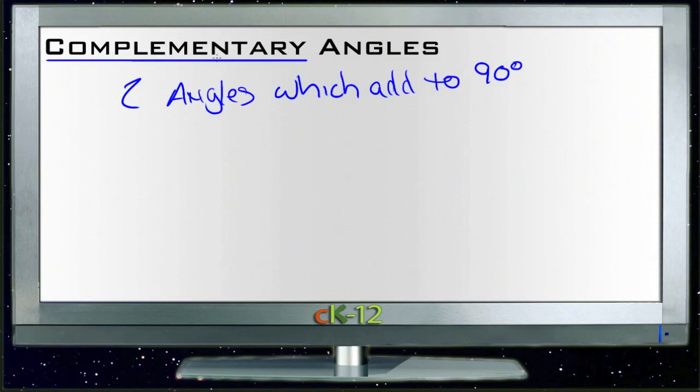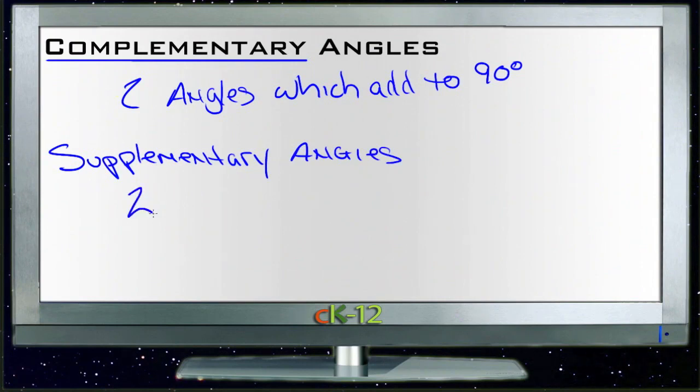You're also going to run into another sort of type of pairing of angles here in another couple of lessons called supplementary angles. The reason I'm bringing that up now is that it's very common to get the two confused. Supplementary angles are two angles which add to 180 degrees.